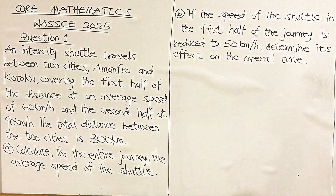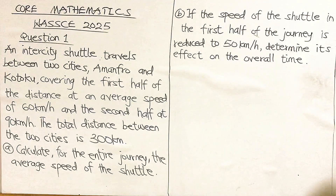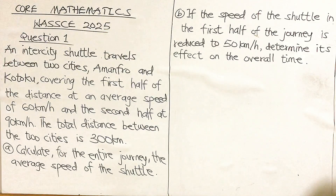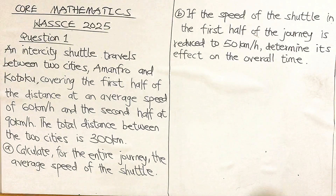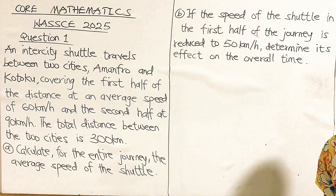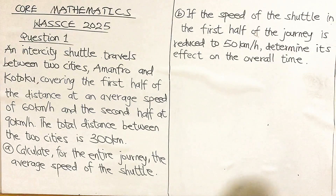Part A: calculate the average speed of the shuttle for the entire journey. Part B: if the speed of the shuttle in the first half of the journey is reduced to 50 km per hour, determine its effect on the overall time. So let's get a solution on the board.